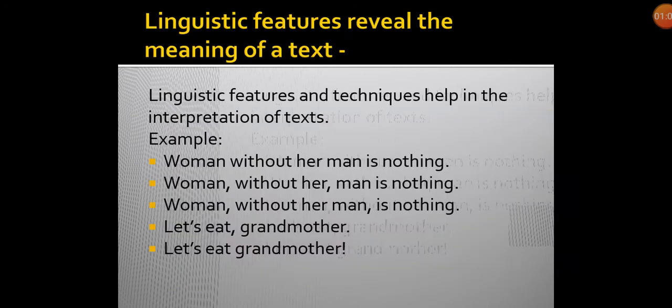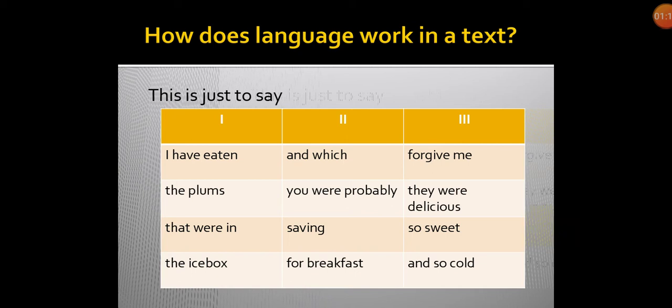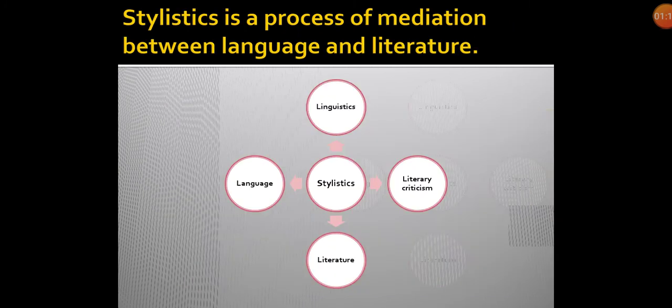And one small example of how linguistic features reveal the meaning of a text — and one funny example: 'Let's eat, grandmother' versus 'Let's eat grandmother,' right? And some connection between how stylistics seems to connect, forming a network between language, linguistics, literature, and literary criticism.